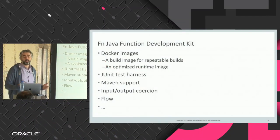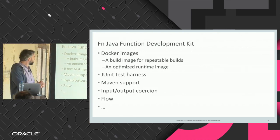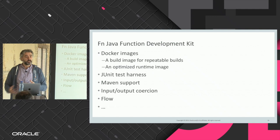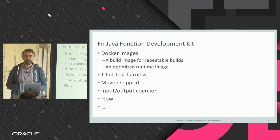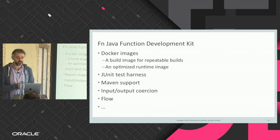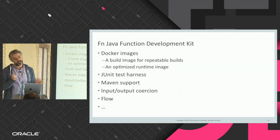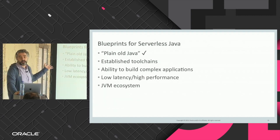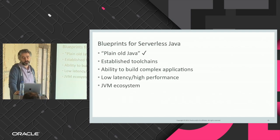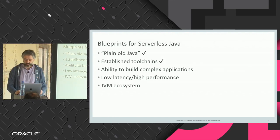The Java FDK — Function Development Kit — provides optimized build and runtime images, unit testing support, and Maven support, among other things. You can develop Java functions in FN without the FDK, but it's much easier with it. To summarize: plain old Java — yes, the function had nothing specific to the platform. Established toolchain — yes, Maven and IDE support.